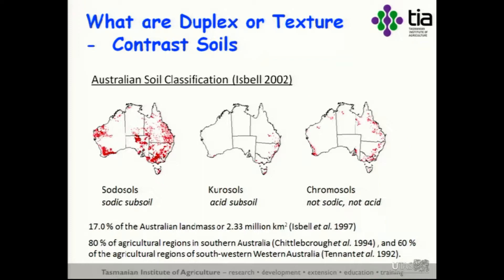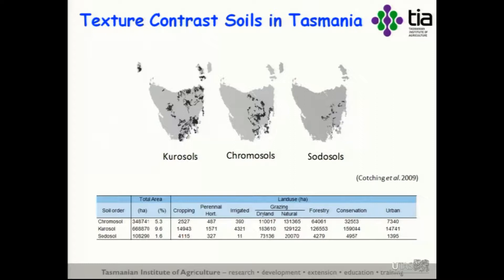The texture contrast soils are widely distributed. They account for about 17% of the Australian land mass and 80% of agricultural regions in southern Australia — one of our most important agricultural soils in Australia. Even in Tasmania, the dominant agricultural areas are underlaid by texture contrast soils, particularly the kurosols in the south and southeast, and the chromosols in the central regions. With new irrigation developments occurring around the state, these are highly relevant soils for both existing and future agricultural production in Tasmania.